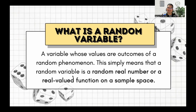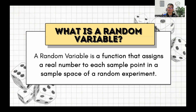When we say a random variable, it is a variable whose values are outcomes of a random phenomenon. This simply means that a random variable is a random real number, or a real-valued function on a sample space. Moreover, a random variable is a function that assigns a real number to each sample point in a sample space of a random experiment.